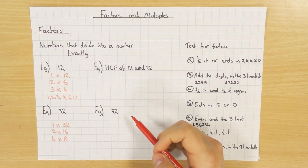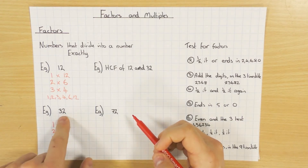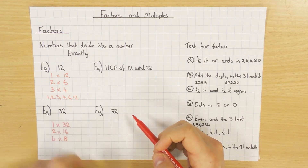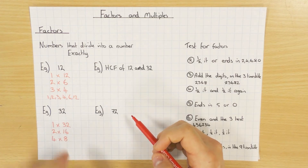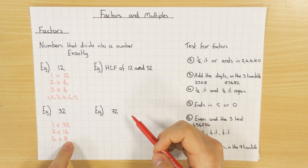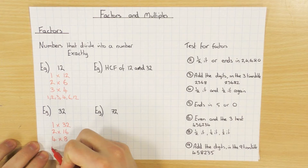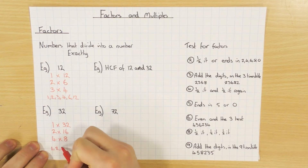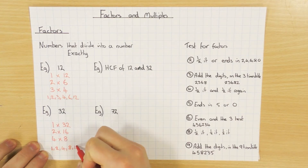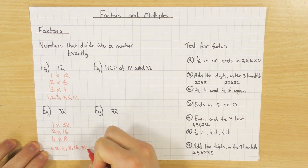Next one to test would be 5. Well, it doesn't end in a 0 or 5, so 5 definitely doesn't go in there — it's not in the 5 times table. Likewise with 6: 32 isn't in the 6 times table. And neither is 7. And then I hit 8 — I'm going back on myself so I can stop. So the factors of 32 are: 1, 2, 4, 8, 16 and 32.